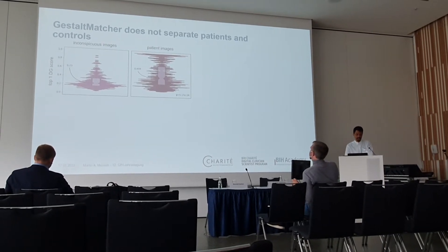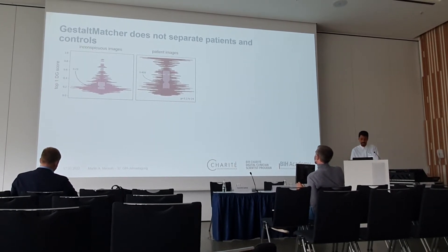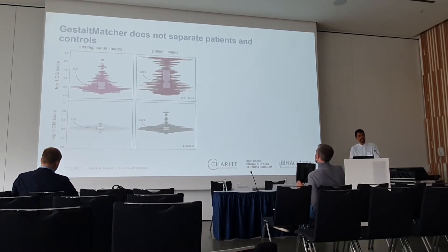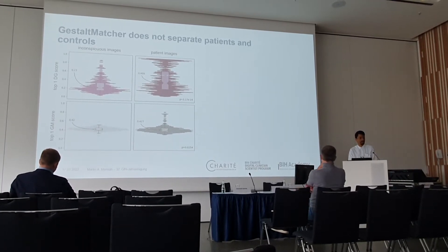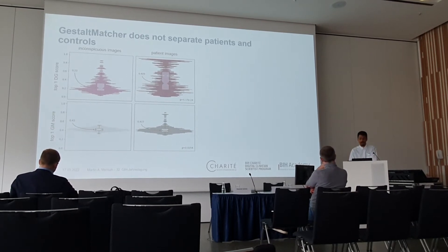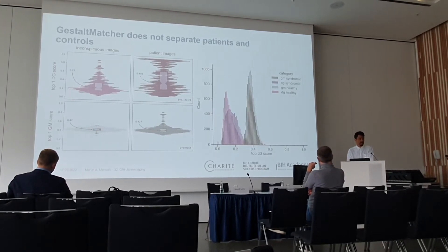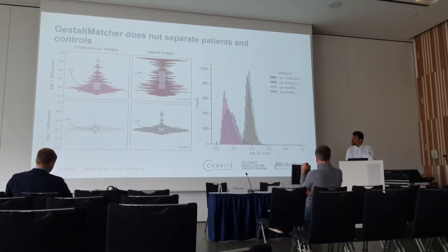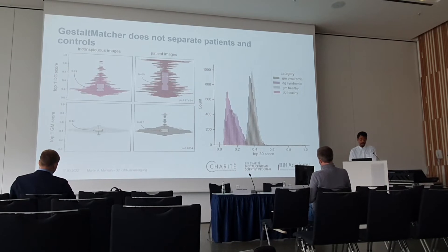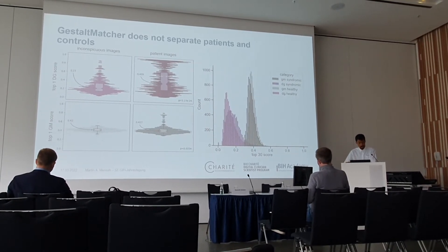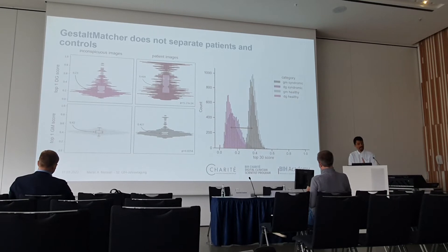We've already seen that Deep Gestalt cannot properly separate affected and unaffected individuals. We tested this with Gestalt-Matcher as well, and here Gestalt-Matcher also fails to achieve the task — but that's because neither of them was trained to achieve this. We tested this not only on top-one scores but also on top-30 scores, and found again that scores of affected and unaffected individuals are similar. What I found surprising is that although the technologies share the same core algorithm, the calibration is different: Gestalt-Matcher scores tend to be higher than Deep Gestalt scores.